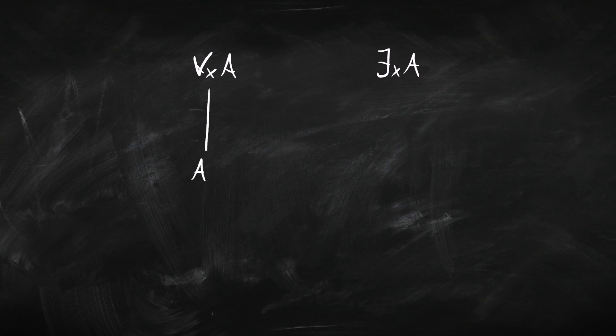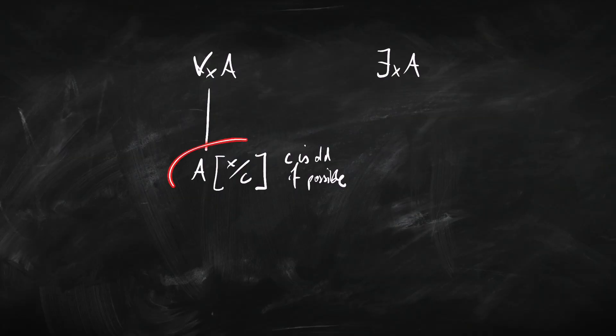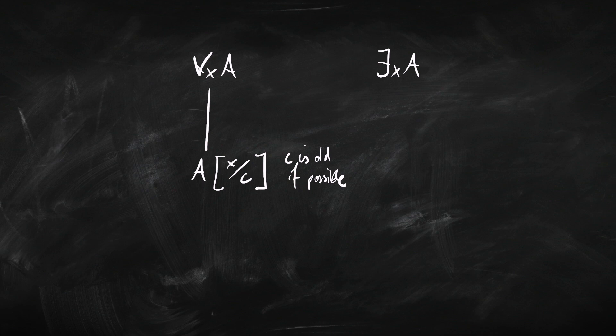The rule instantiates the universal quantifier with a particular constant — going from 'for all x A' to A with all the x's replaced by that constant C. C should be a constant already in the tree if we've got any at all. If we've already used names like a, b, or c, we can reuse them. If we don't have any constants in the tree, then we can introduce a new one.